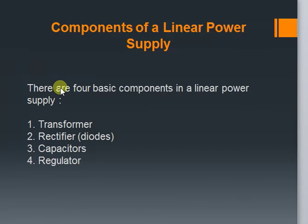Let us now see the basic components of a linear power supply. There are four basic components. The first is a transformer. This is a device which is connected to the AC mains and is used to step down the voltage to the desired level. The output voltage of the transformer depends on the ratio of the number of turns on the primary side to the number of turns on the secondary side.